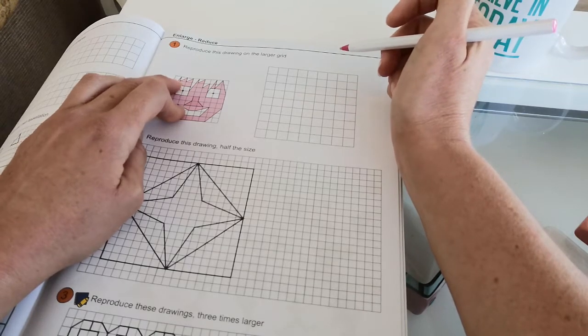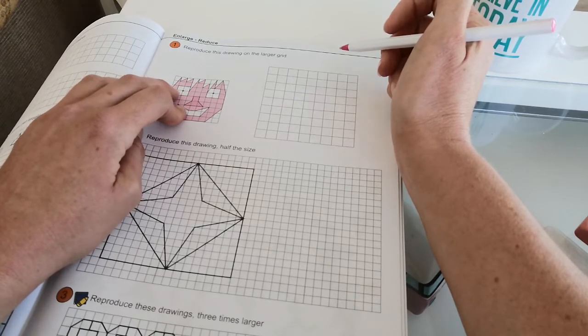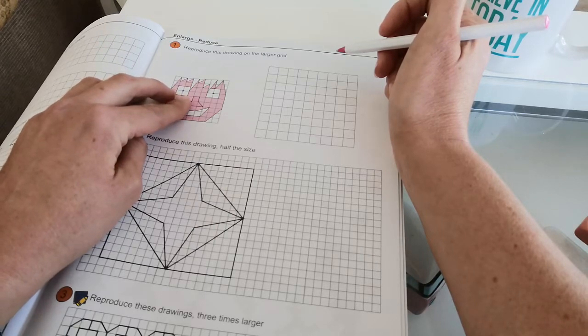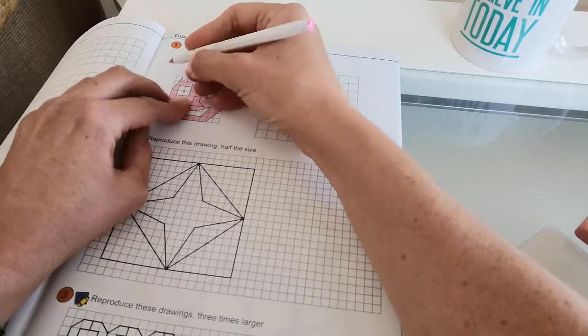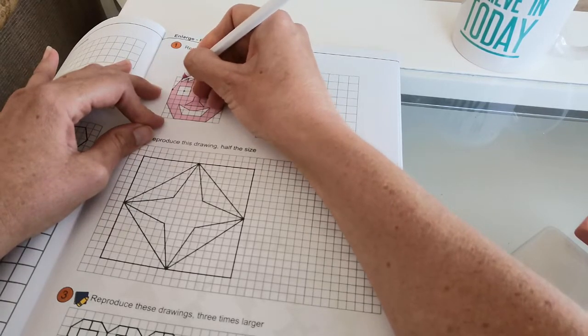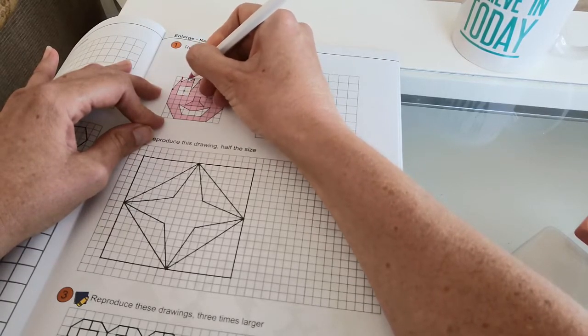The key is to look at each square individually. Now I also like to draw in some key points, so you know I like the corners, so anywhere there's a corner or a key point I'm going to mark.